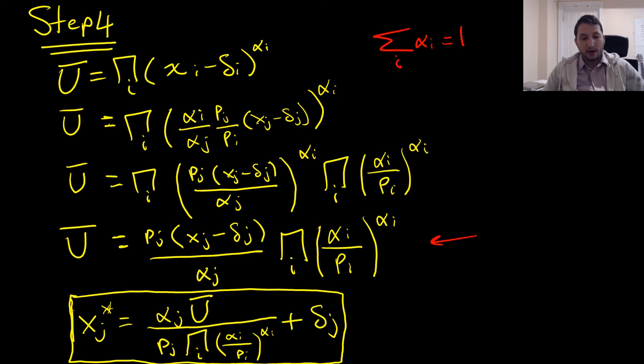And from there, we're able to get our Stone-Gary Hicksian demand equations. And one thing that you should know is that this is exactly like our Cobb-Douglas case, except we're just adding an additional subsistence expenditure term right there. This is how we solve for our Stone-Gary Hicksian demands.